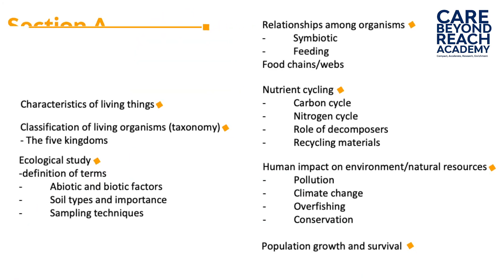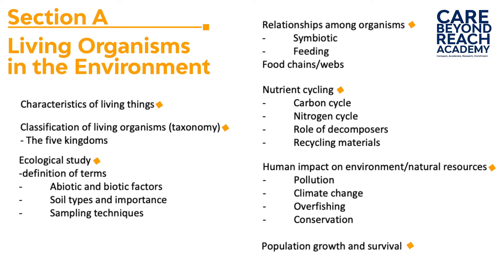The topics in Section A include characteristics of living organisms, which you can summarize as MRS GREN — movement, respiration, and the other processes that living organisms carry out. You have classification, which involves the five kingdoms and how you classify organisms. You have ecology, which involves feeding relationships, abiotic and biotic factors, and soil sampling techniques and how those things impact the ecosystem.